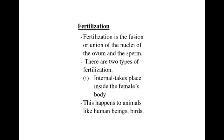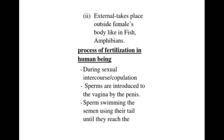There are two types of fertilization. First, we have internal fertilization — the word 'internal' means inside. So internal fertilization is fertilization that takes place inside the female's body, and this happens in animals like human beings, birds, carnivores, omnivores, and many others. Then we have external fertilization — the word 'external' means outside. External fertilization takes place outside the female's body, and it happens in animals like fish and amphibians.